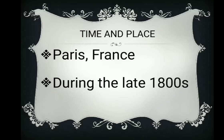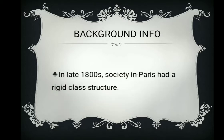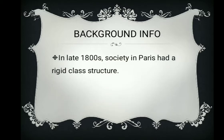We need to understand what kind of society was prevalent at that time — how people lived, their styles, and how they managed their lives. In the late 1880s, society in Paris had a rigid class structure, much like many societies. It was divided into different classes or categories, and the same kind of structure existed in France as well.